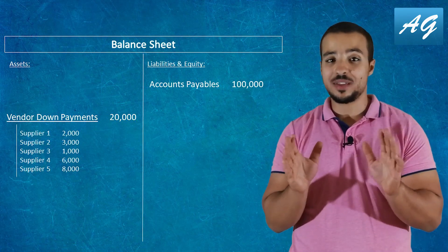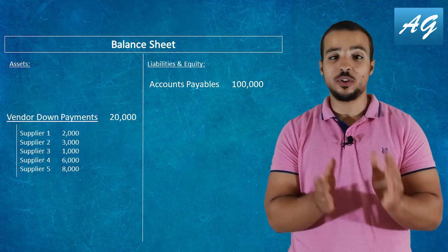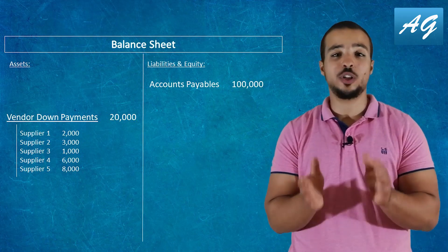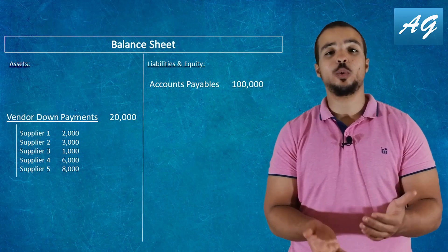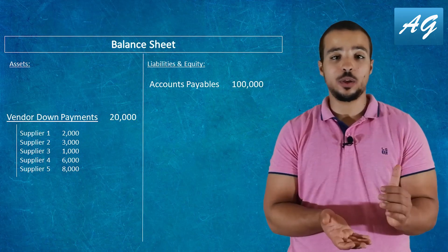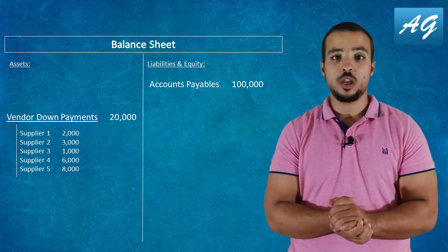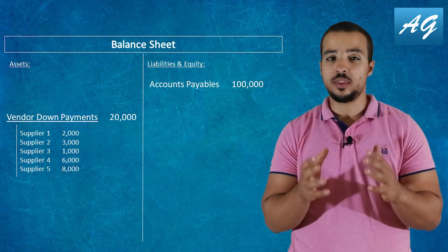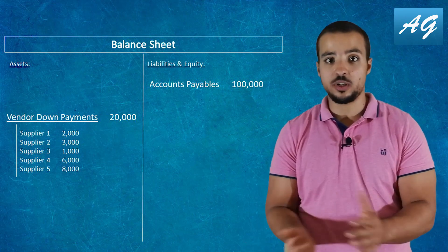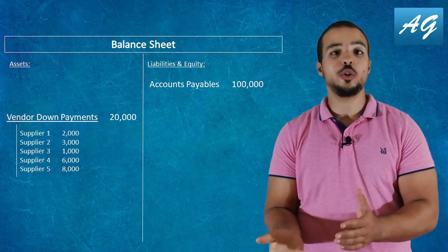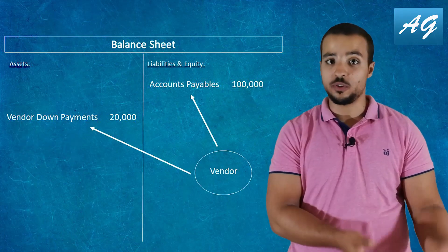Let's assume that we have five vendors. We have to go to each vendor and check how much in down payments we paid to each of them. Then we add the amounts together to get the total amount of the vendor down payments account. So the vendor down payments account is another reconciliation account, and it also includes numbers and transactions posted from the different vendors.